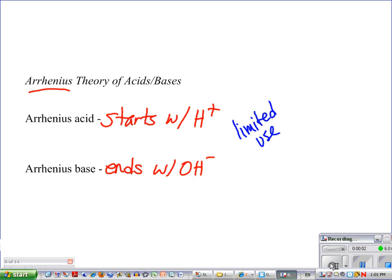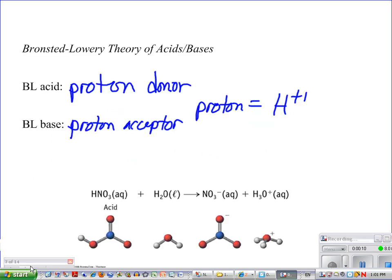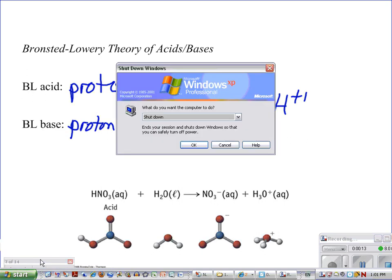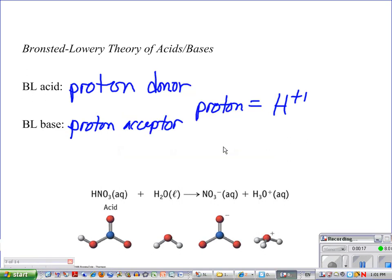Now we have other definitions for acids and bases. You've already learned that if something starts with hydrogen ions, it's an acid. If it ends with hydroxide, it's a base. This is very limited in its use, though, because things have to have hydrogen ions and hydroxide ions in order for this to work.